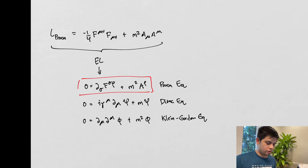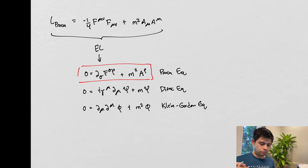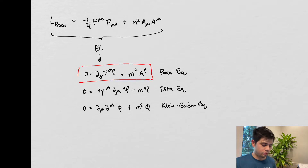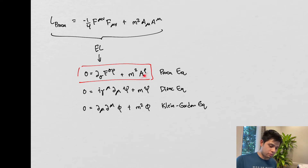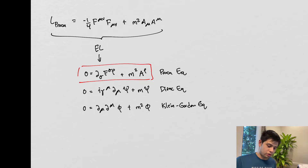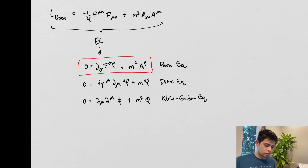All right, so now we're going to talk about the solutions to the Proca equation. Just as a recap, we went over the Proca Lagrangian, which is right here. Then we performed the Euler-Lagrange equations and got our Proca equation. We did the same thing in previous videos with the Dirac equation and the Klein-Gordon equation. Just as a comparison, this is what they all look like together, just for ease of organization.